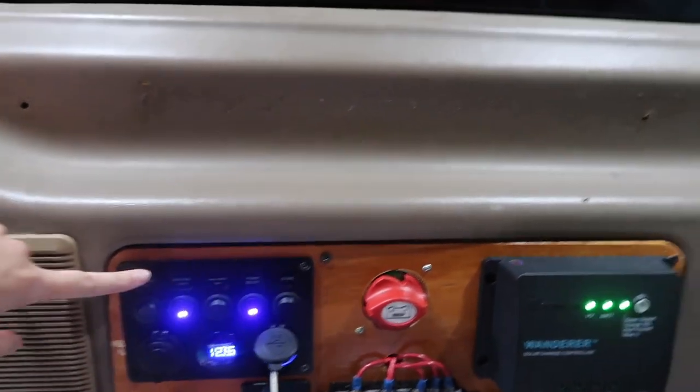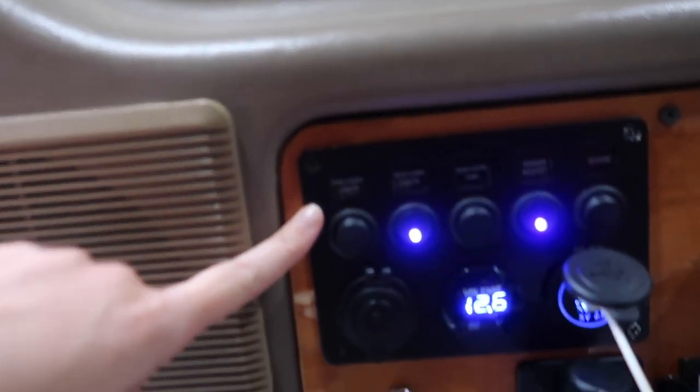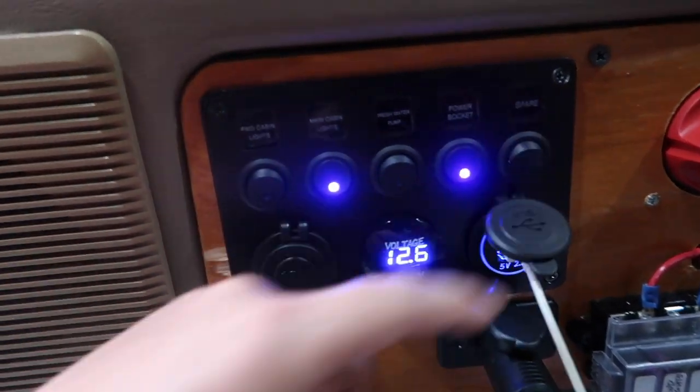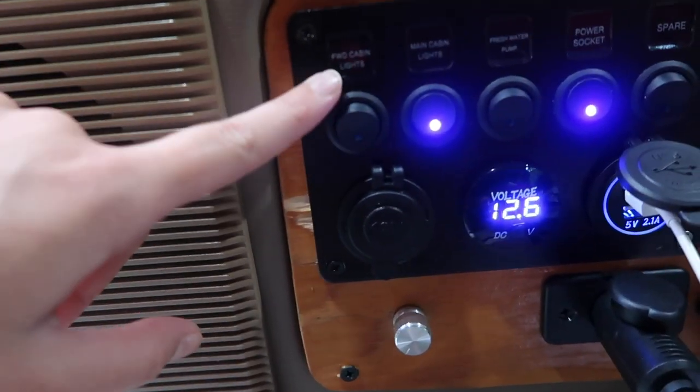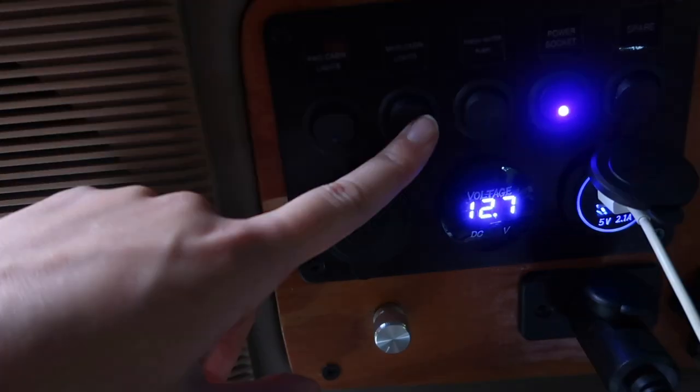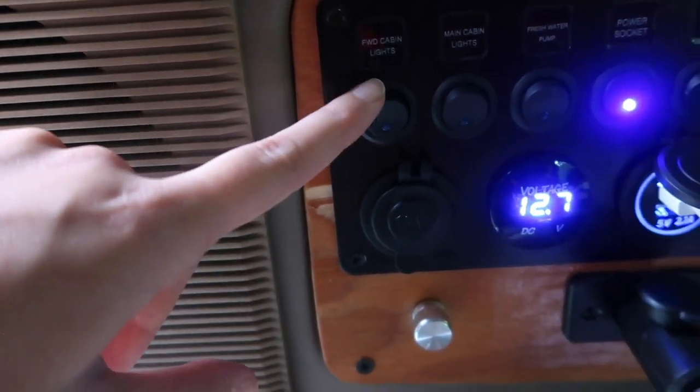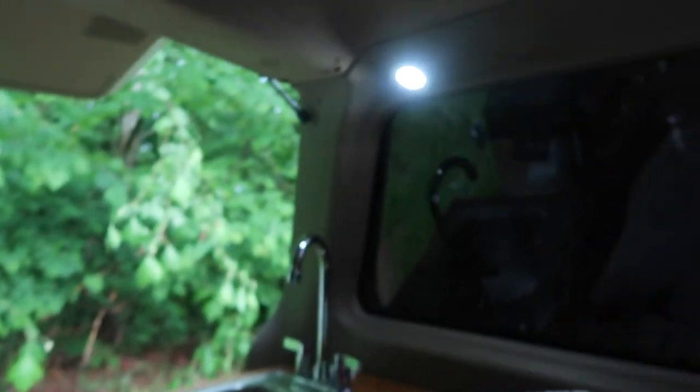The first thing I'm going to start with is the switch panel. Above all the switches are the labels, and I'll walk through them. The first one is the forward cabin lights. Let me go ahead and turn this one off. But the forward cabin lights, turn that on right there, and the lights come on.